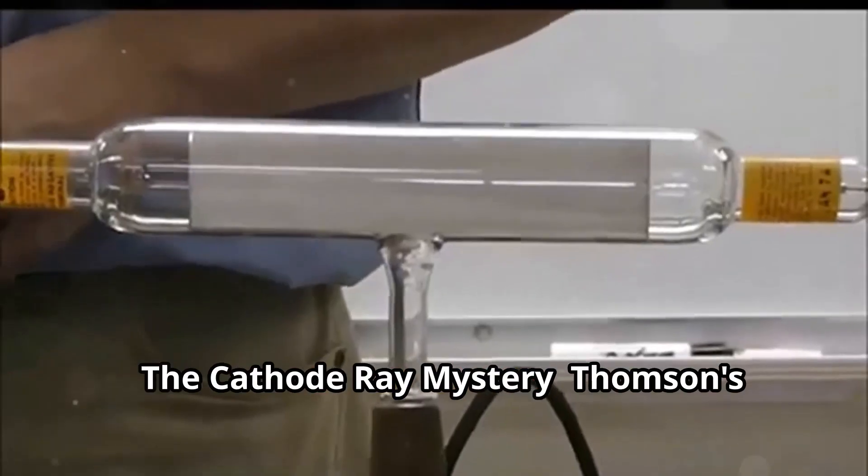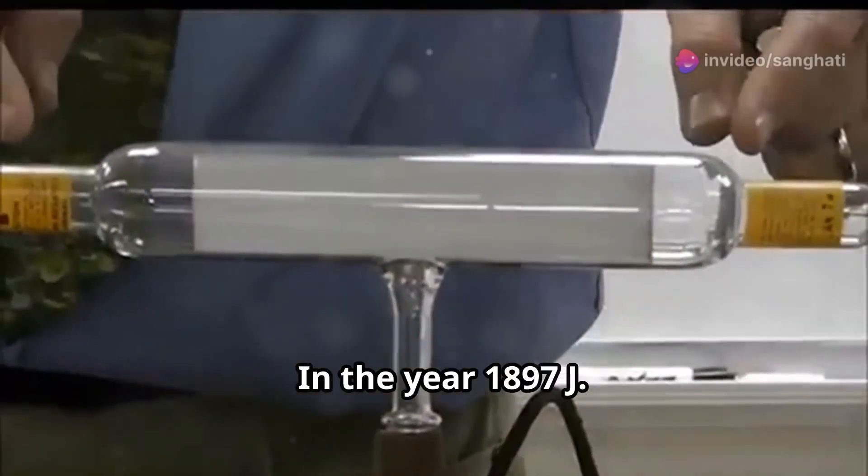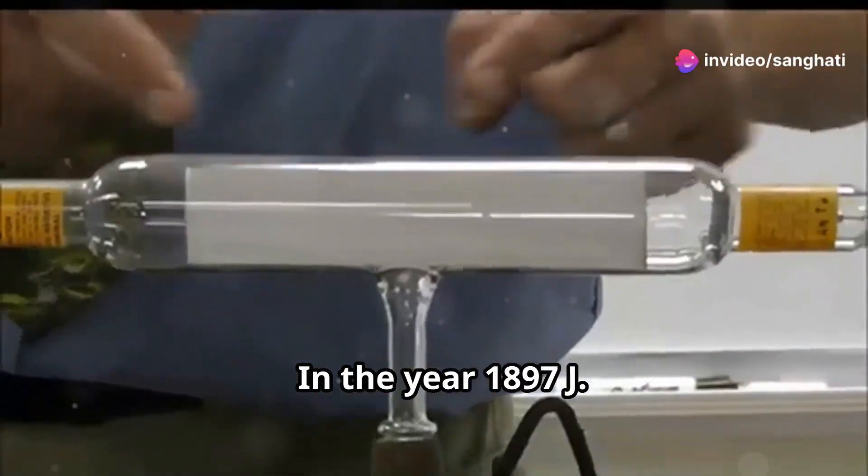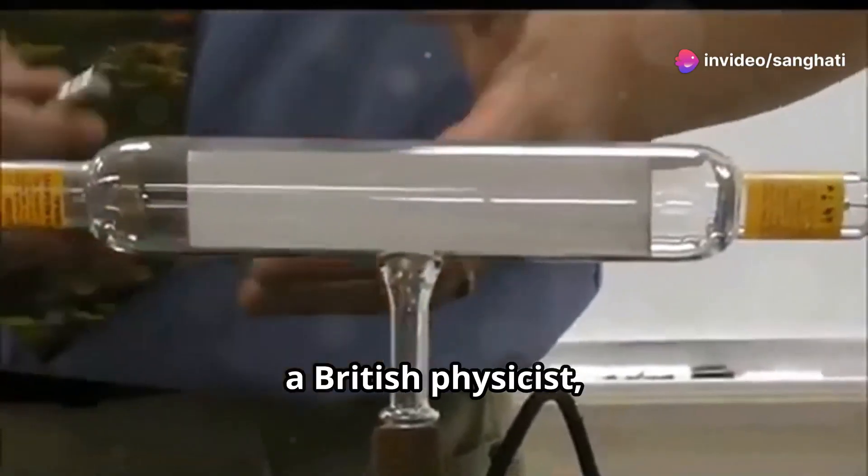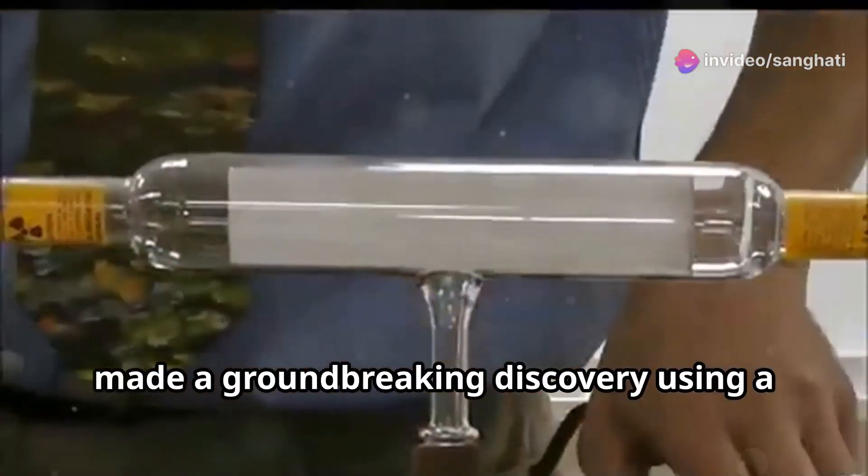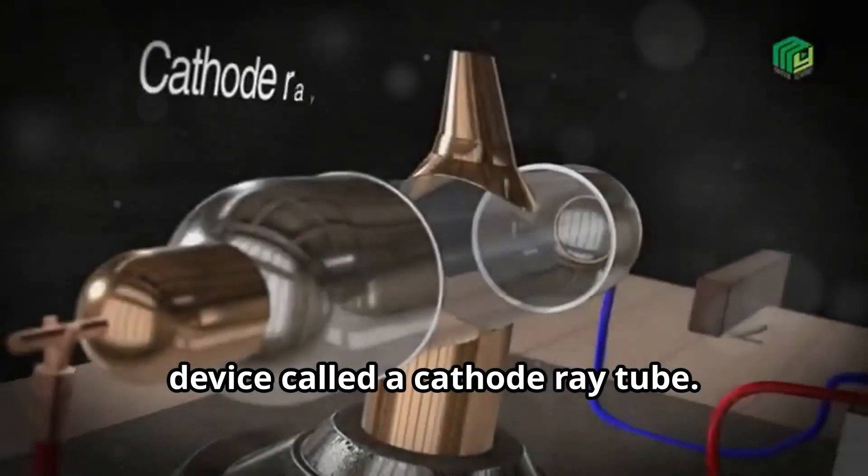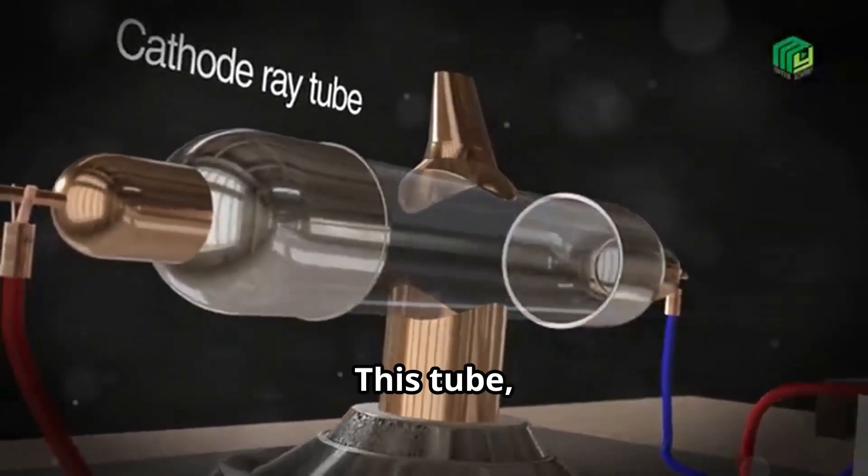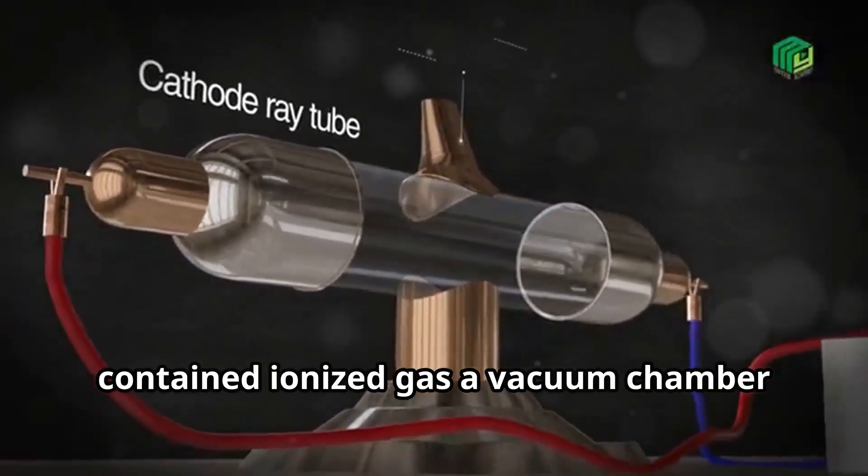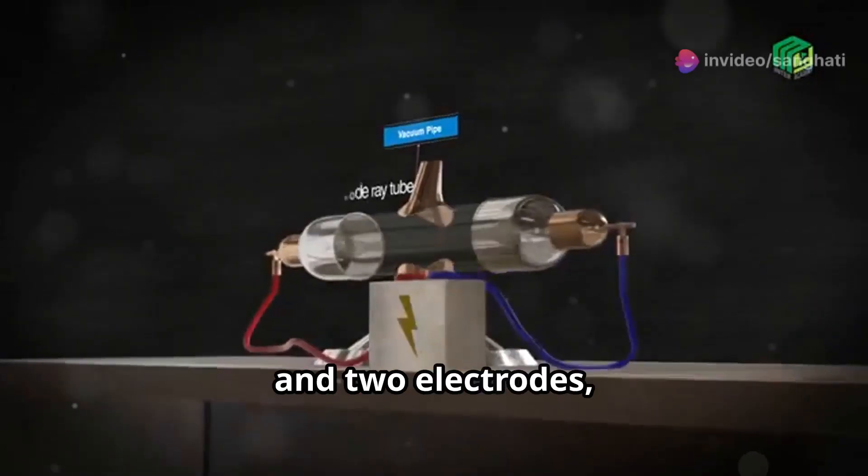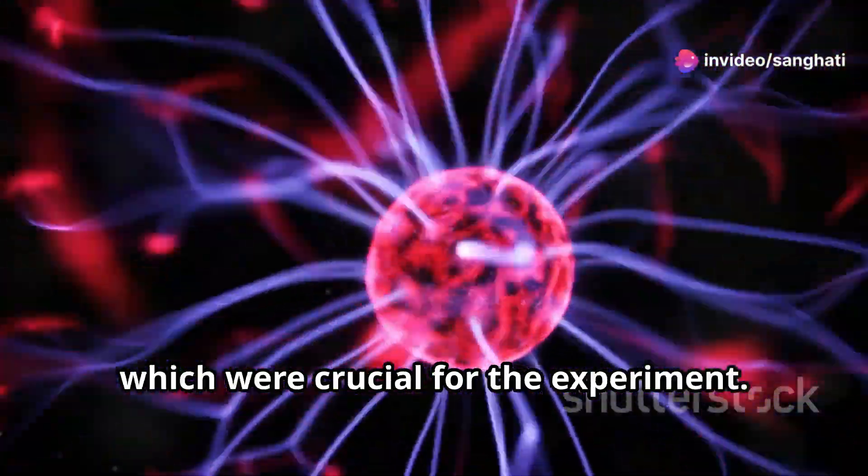The Cathode Ray Mystery: Thompson's Electron Enigma. In the year 1897, J.J. Thompson, a British physicist, made a groundbreaking discovery using a device called a cathode ray tube. This tube contained ionized gas, a vacuum chamber, and two electrodes, which were crucial for the experiment.